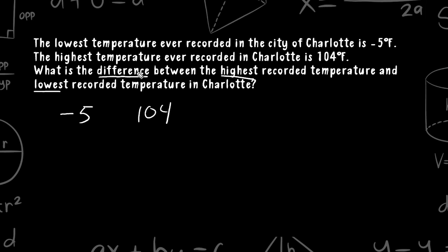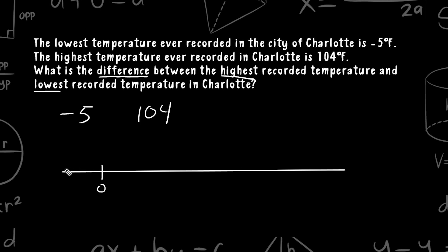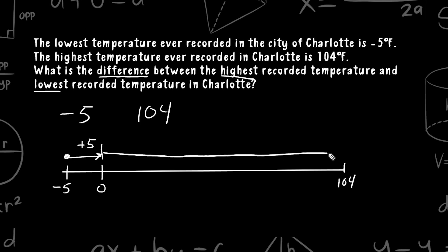The word 'difference' means subtraction. I would think about this as distance on a number line. We have 0 and negative 5. Starting at negative 5, to get to 0 we go up 5 units. To get from 0 all the way to 104 we go 104 more units. Altogether, we would travel a distance of 109 degrees.